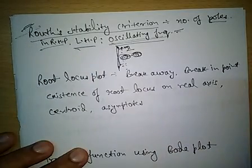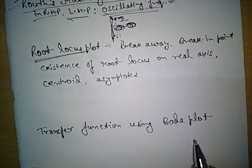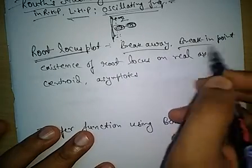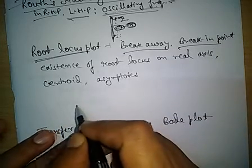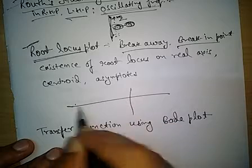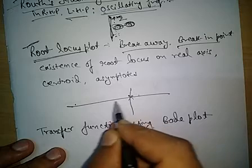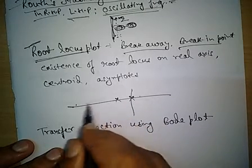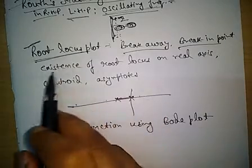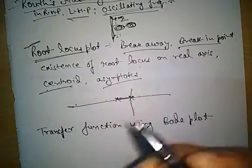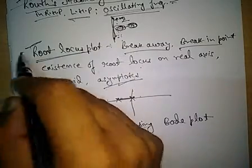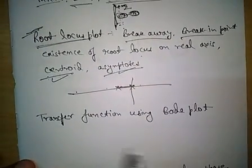The next topic is Root Locus Plot, also an important topic. For a given root locus, questions can ask for the breakaway point or the breaking-in point, or we may have to draw the root locus for a given transfer function. We must know where roots lie on the real axis — to the left of an odd number of poles and zeros. Important properties include finding the centroid and the angle of asymptotes.